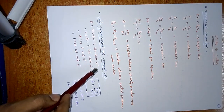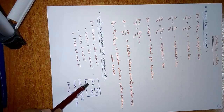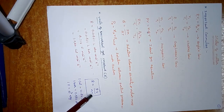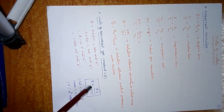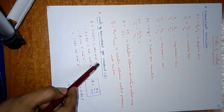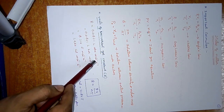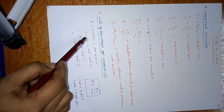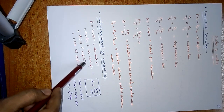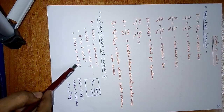Here we are using universal gas constant units. From PV = NRT, R = PV/NT. Based on the units, R has different values: R = 0.0821 L·atm·mol⁻¹·K⁻¹, or 0.0831 L·bar·mol⁻¹·K⁻¹, or 8.314 J·mol⁻¹·K⁻¹, or 1.987 cal·mol⁻¹·K⁻¹.